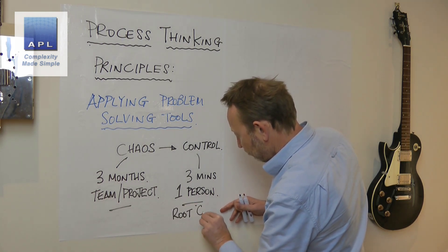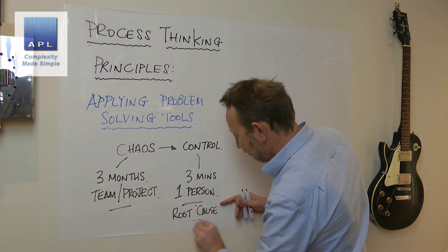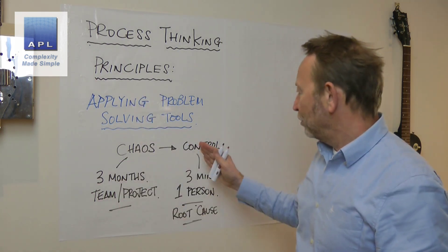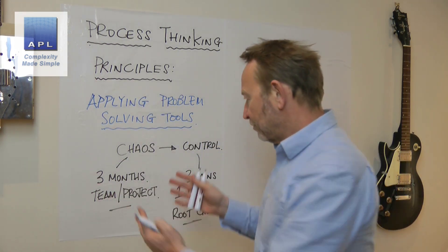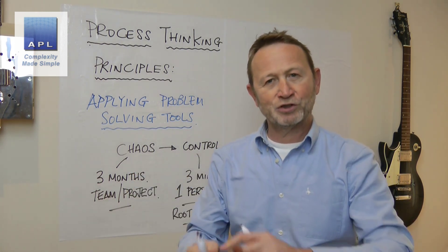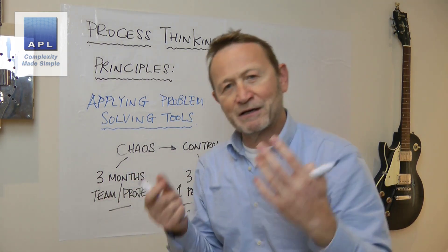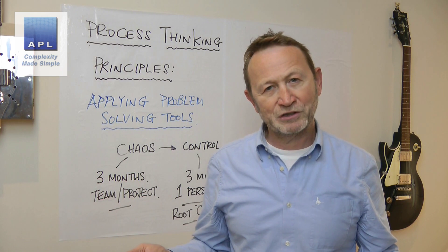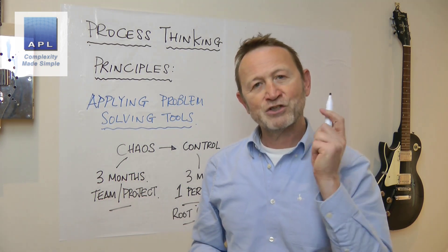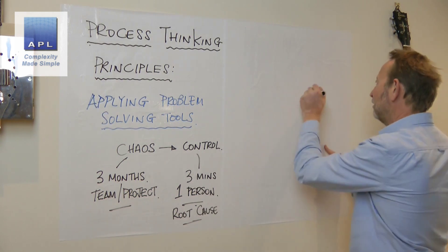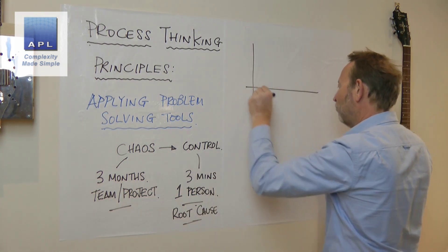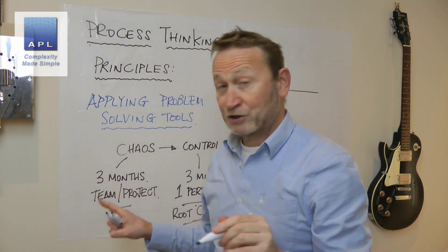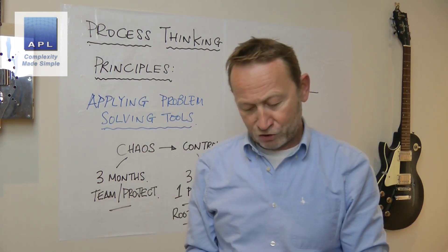The problem will have a root cause which is relatively easy to find, and therefore the tools you use here are completely different. The team approach — a project approach — deep deep problem solving goes on in the chaotic situation. The controlled situation is just a process audit; it's a piece of cake, very simple. So what's the difference between chaos and control? All you have to do is plot a graph and you'll know. Apply the problem solving tools to the right problem in the right way.